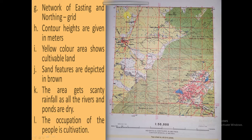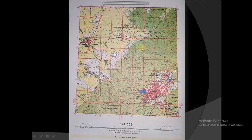The occupation of the people is cultivation. We can see yellow color here, so agricultural activities have been carried out in this area. So, the occupation of the people is cultivation. This is the topographical map. Hope you all understood the concept. I will meet you in the next video. Thank you so much.